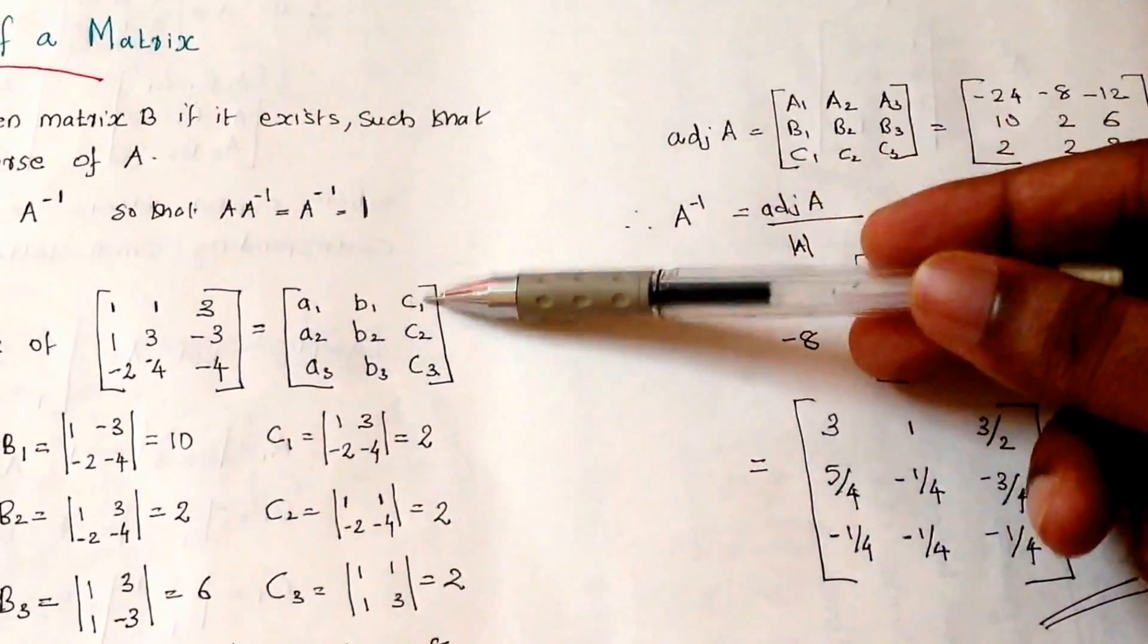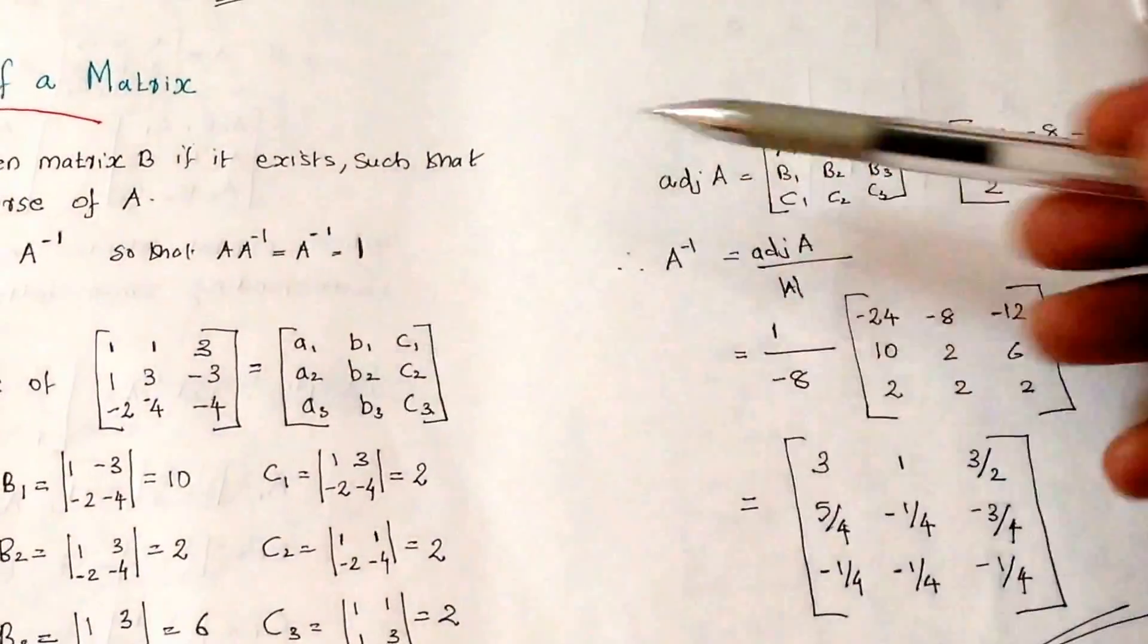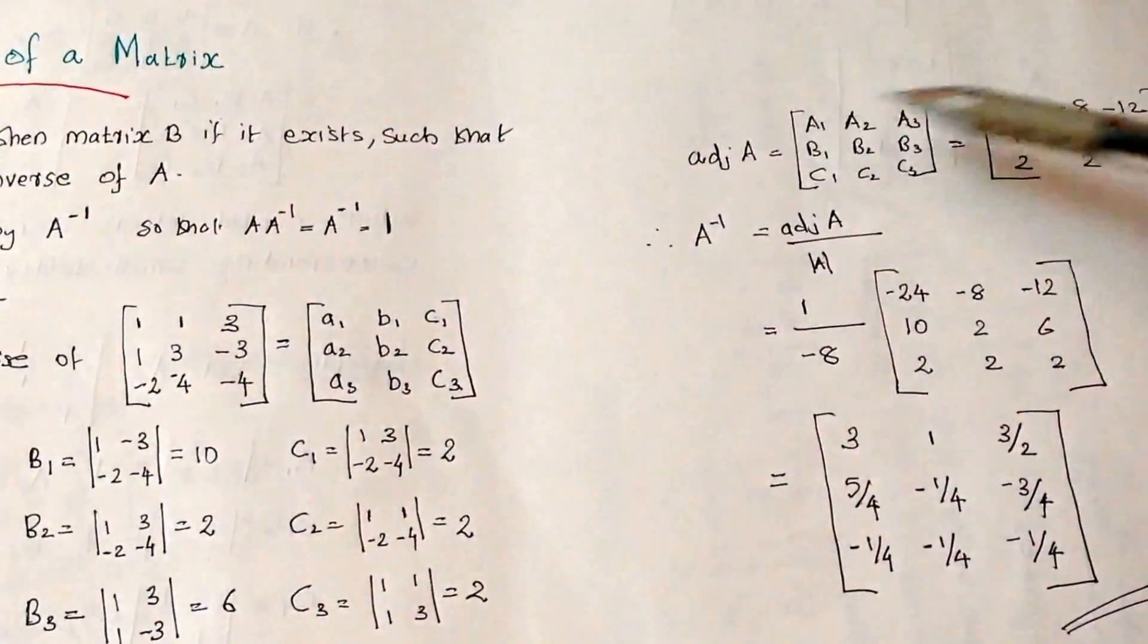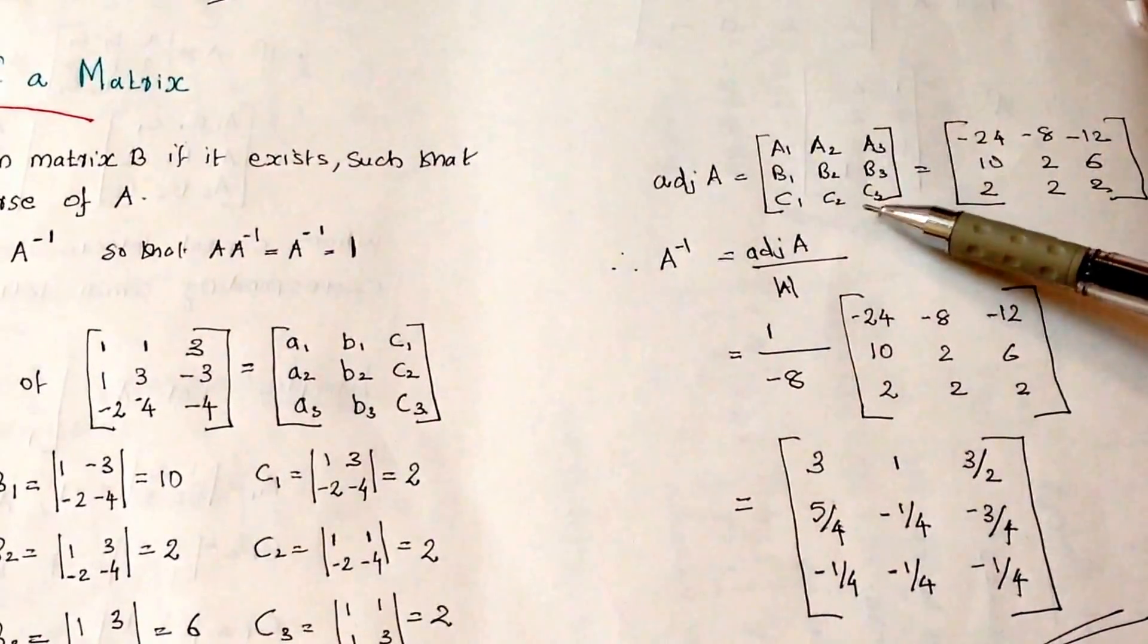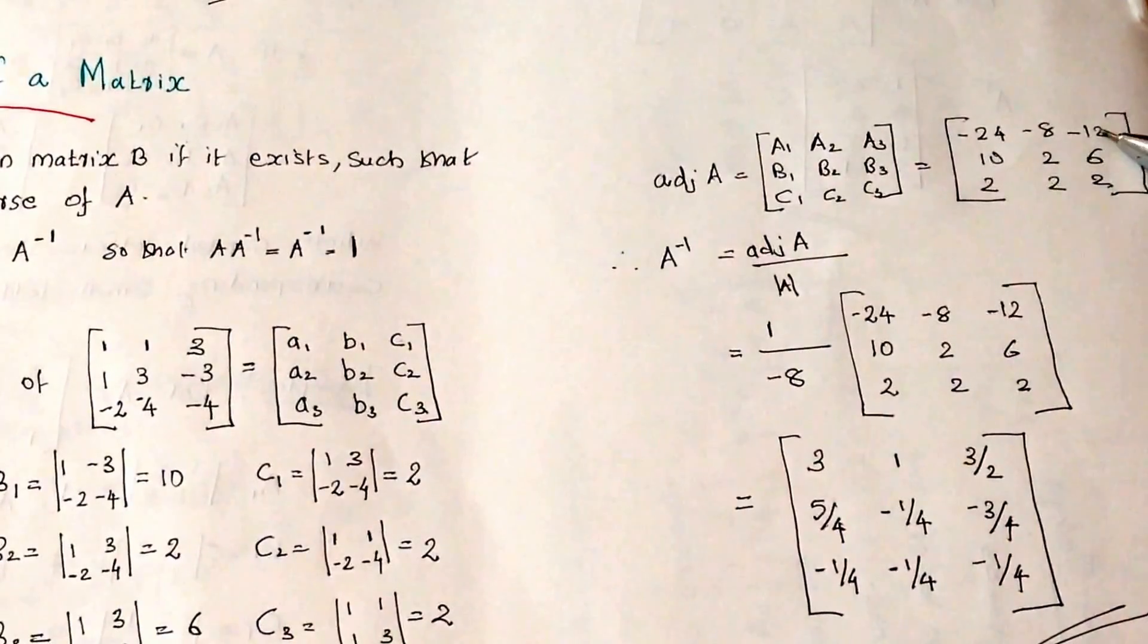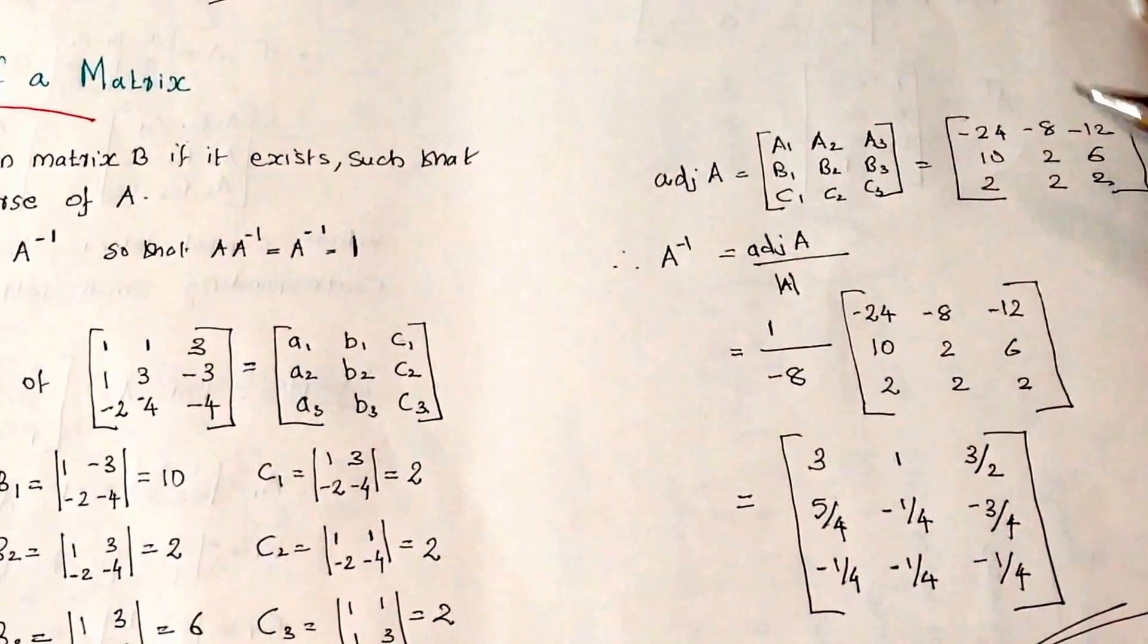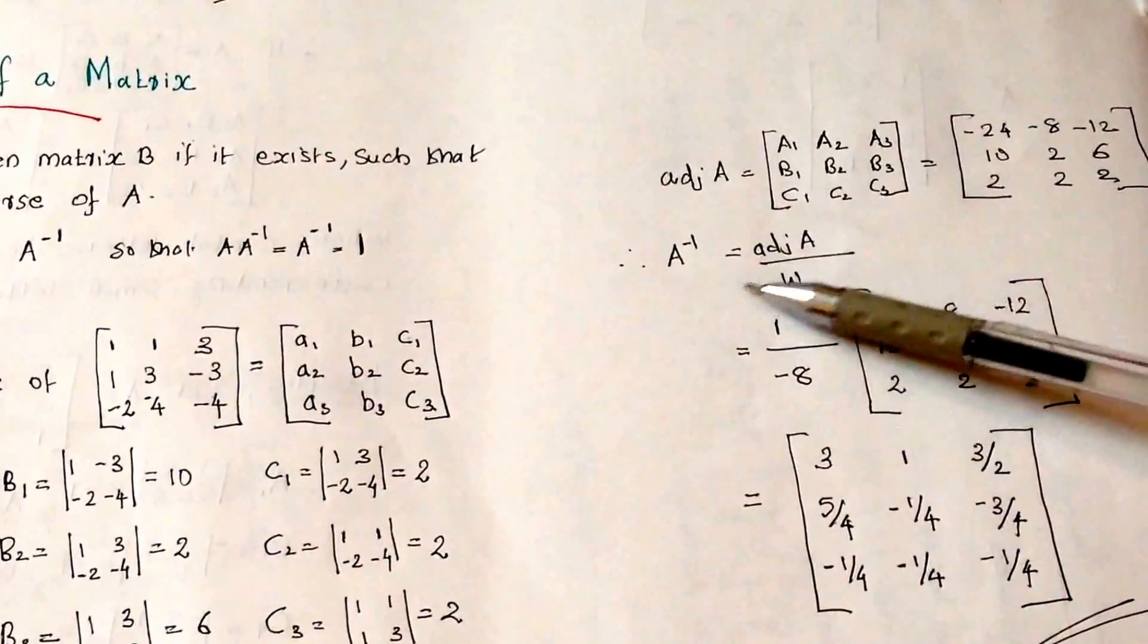This row we have converted into column, this column we have converted to row, because adjoint A is the transpose of the matrix. So we got this value: minus 24, 10, 2, minus 8, 2, 2, minus 12, 6 and 2. So we found the adjoint A and now we will compute A inverse.